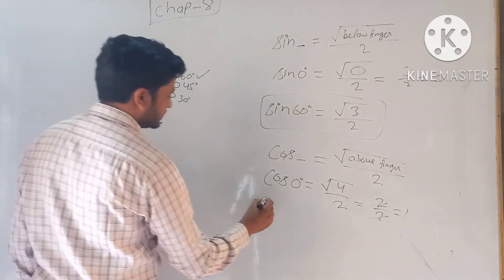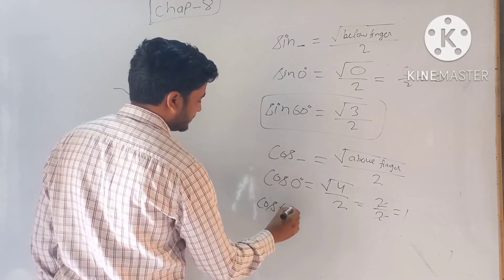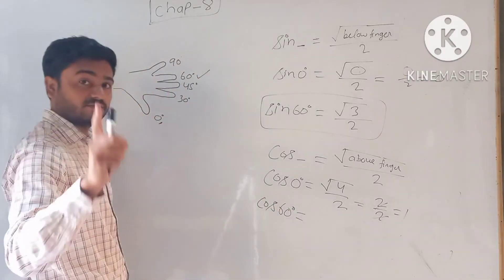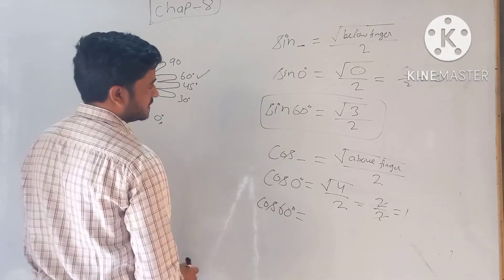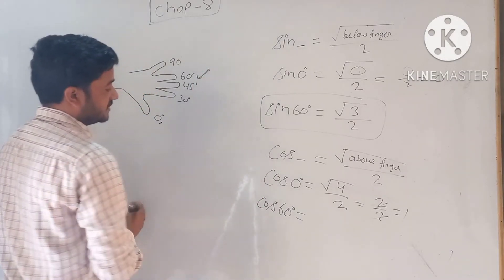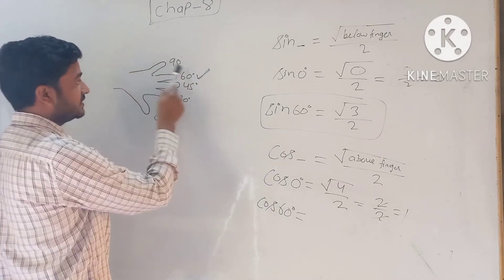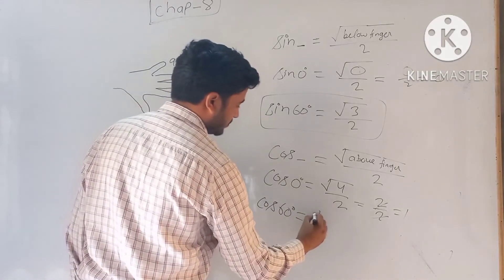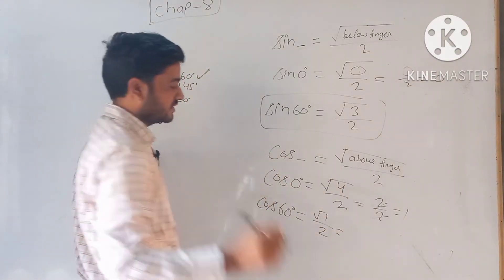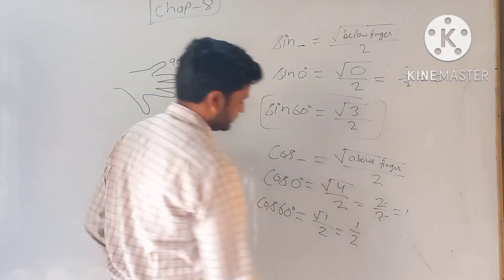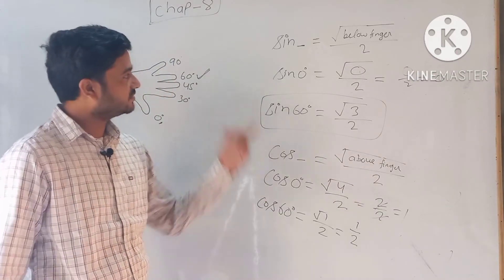Let's find one angle, like cos 60 degrees. We can find the value. 60 degrees - above the finger, 60 degrees means 1 finger above. So you put under root 1 upon 2, which equals 1/2.